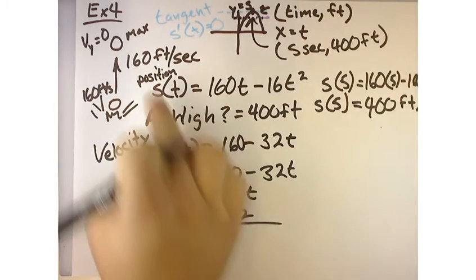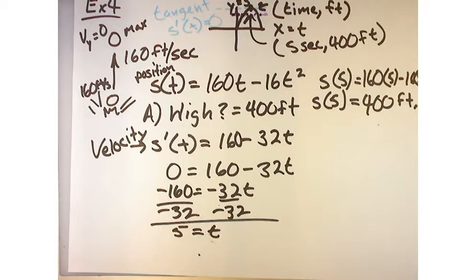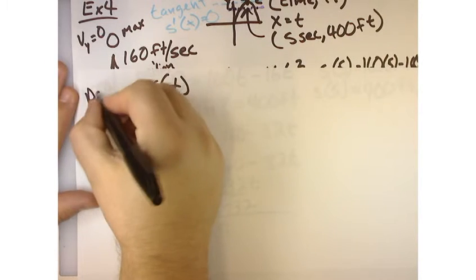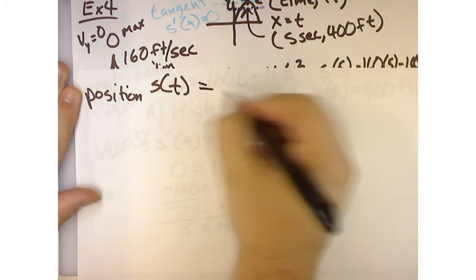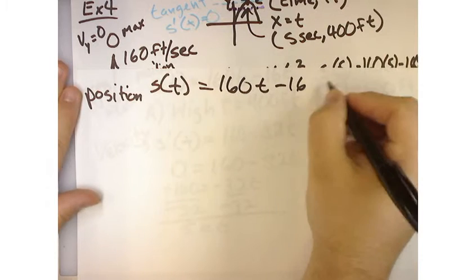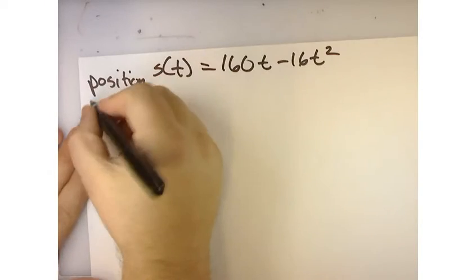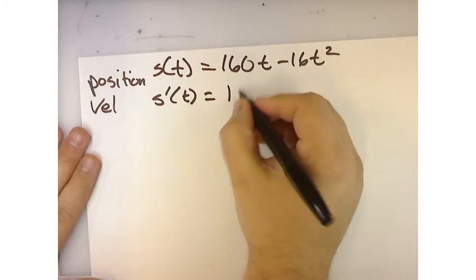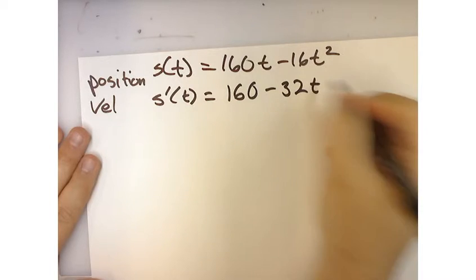Now for part C. So remember, we're getting all this information from this original equation. So it says, what is the acceleration of the rock at any time during its flight after the blast? All right, so now let's recap what we've done. We said that the position of the rock is modeled as S of T, which is 160 T minus 16 T squared. So that gives us the position of the rock. Then we said that if we took the derivative of that, that would be the rate of change, or the change in position, and that is the velocity, which was 160 minus 32 T. So that's the velocity.